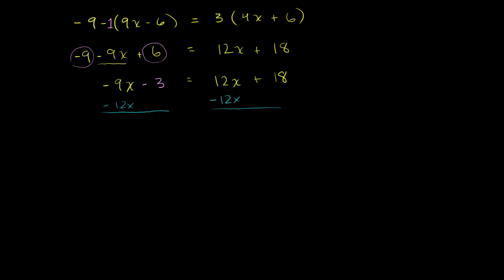On the left-hand side, I have negative 9x minus 12x. Negative 9 minus 12 is negative 21x, minus 3, is equal to 12x minus 12x — that's 0, so those cancel out. That was the whole point of subtracting 12x. And on the right-hand side we are just left with 18.